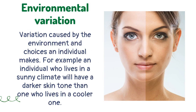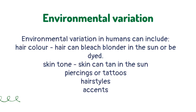Variation can be caused by the environment and choices an individual makes. For example, an individual who lives in a sunny climate will have a darker skin tone than one who lives in a cooler one. Environmental variation in humans can include hair color — for example, hair can bleach blonder in the sun or be dyed — skin tone, tanning in the sun, piercings, tattoos, hairstyles, and accents.